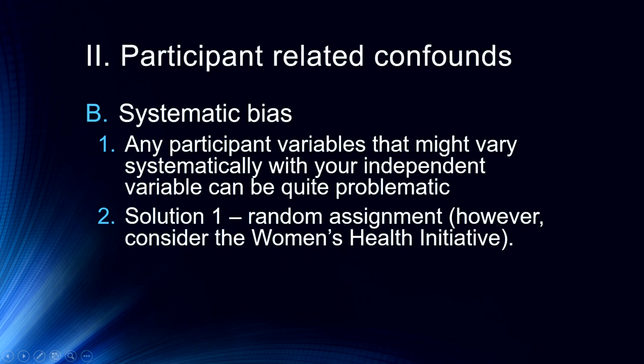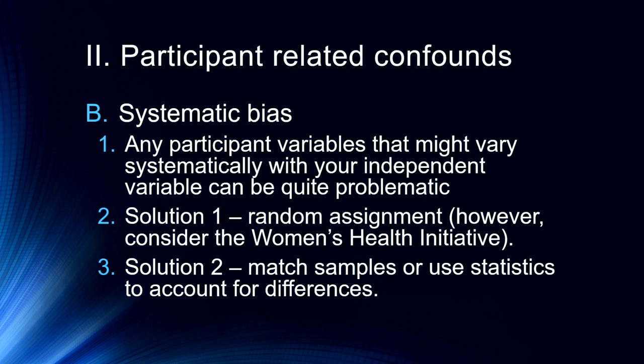But fate being what it is, sometimes we will have systematic bias anyway despite having done random assignment. In an extensive nationwide study called the Women's Health Initiative, women were randomly assigned to different conditions to receive placebo, estrogen-only replacement therapy, or estrogen and progestin hormone replacement therapy. The problem was that there were systematic differences between those groups, primarily involving levels of education — and despite random assignment, those biases occurred by random chance. So the second solution is to match samples, conducting a secondary analysis where you match groups based on things like education. You can also use analysis of covariance or other statistics to account for these differences.